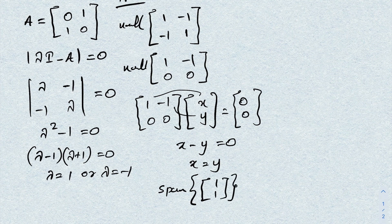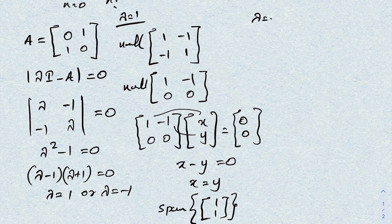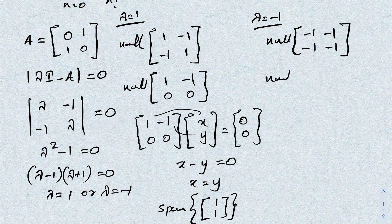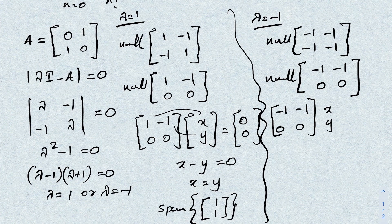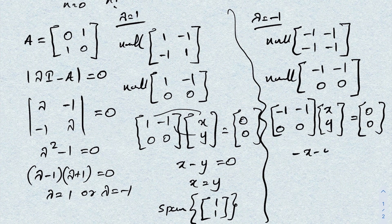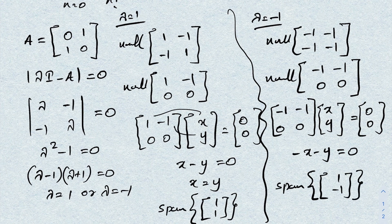When λ = -1, we find the null space of [[-1,-1],[-1,-1]], which row reduces to [[-1,-1],[0,0]]. This gives -x - y = 0, so x = -y. The eigenvector is the span of [1,-1].